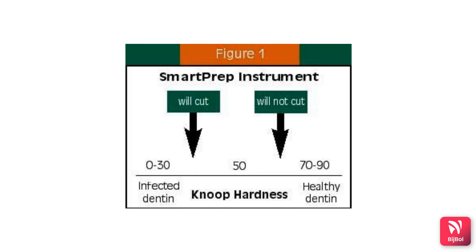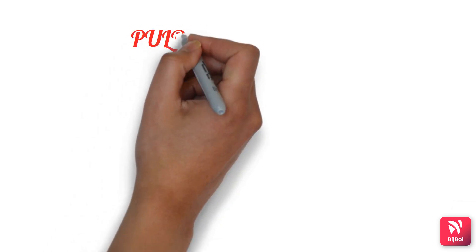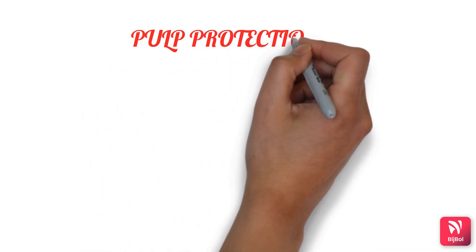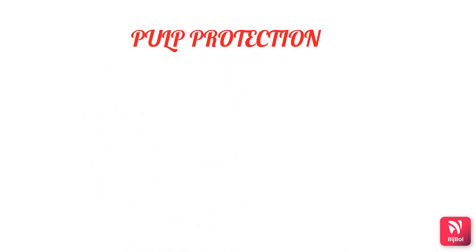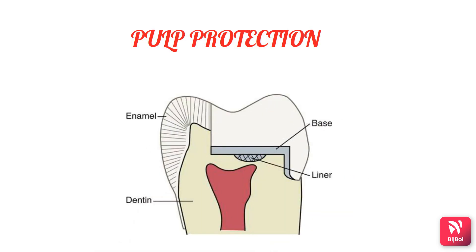The next step is pulp protection. This step is achieved by the use of cavity varnish, liners, bases, or bonding agents. The choice of pulp protection agent is based on the extent of the tubular destruction and proximity of the preparation to the pulp, and the type of restorative material to be used.